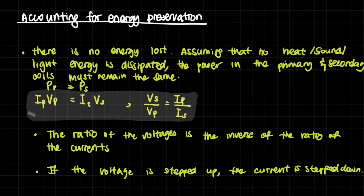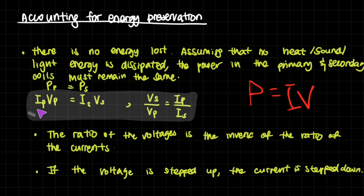It might seem odd that you can increase voltage out of nowhere, so we must account for energy conservation. The principle of conservation of energy still holds: assuming no heat, sound, light, or other energy is dissipated, the power in the primary and secondary coils must remain the same, or energy would be created from nothing or lost to nowhere. Therefore, the power of the primary coil equals the power of the secondary coil. Since P = IV, we have IP × VP = IS × VS.